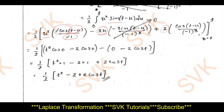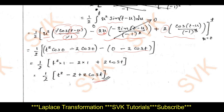Differentiating 2 with respect to u gives 0, so we stop. Applying the limits: the sine terms vanish (sin(t−t)=0 at upper limit, and 0×anything=0 at lower limit). The remaining terms give (1/2)[t²·cos(0) − 2·cos(0) − (0 − 2cos(t))], which simplifies to the required solution: (1/2)(t² − 2 + 2cos(t)).